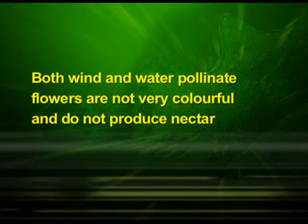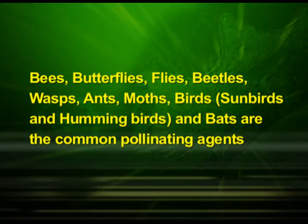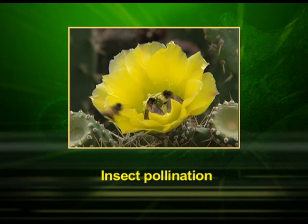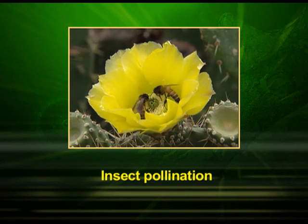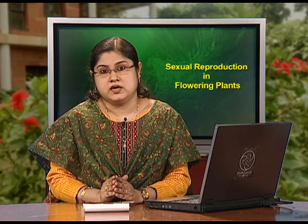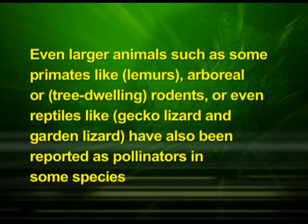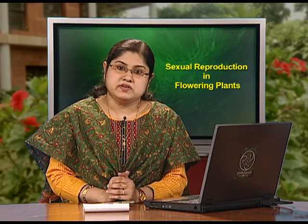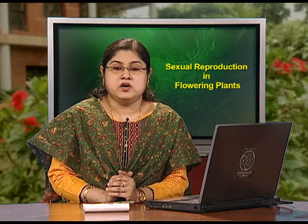Both wind and water pollinated flowers are not very colorful and do not produce nectar. Majority of flowering plants use a range of animals as pollinating agents. Bees, butterflies, flies, beetles, wasps, ants, moths, birds like sunbirds and hummingbirds, and bats are the common pollinating agents. Here in this photograph we can observe an insect pollinating a flower. Among the animals, insects — particularly bees — are the dominant biotic pollinating agents. Even larger animals such as some primates like lemurs, arboreal rodents, or even reptiles like gecko lizards and garden lizards have been reported as pollinators in some species. Often, flowers of animal-pollinated plants are specifically adapted for a particular species of animal.